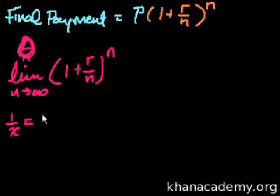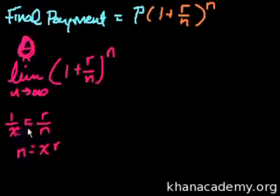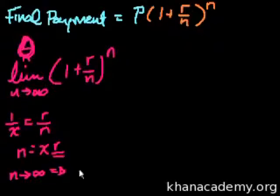Let 1/x = r/n. This means n = x·r. When n approaches infinity, x also approaches infinity. So we substitute and get the limit as x approaches infinity of (1 + 1/x)^(x·r).